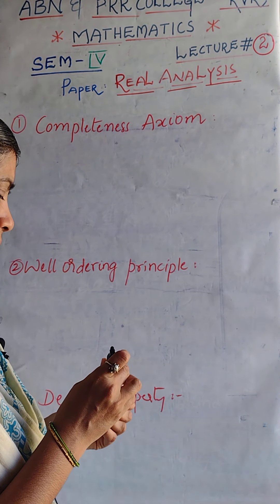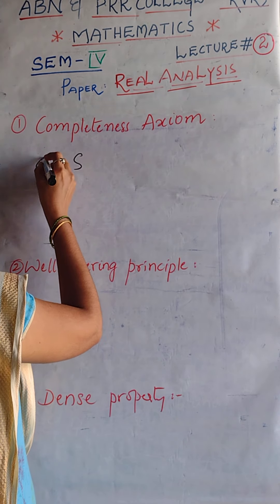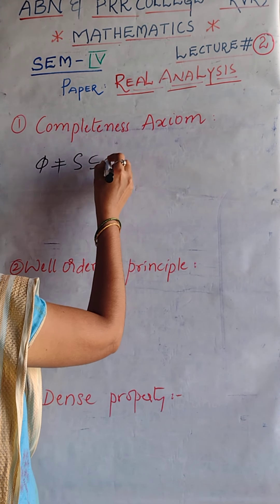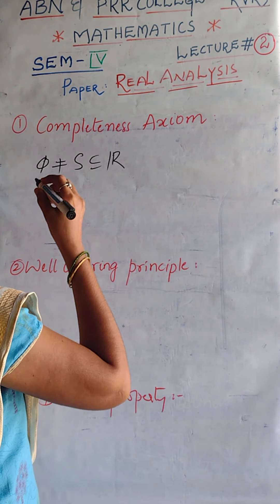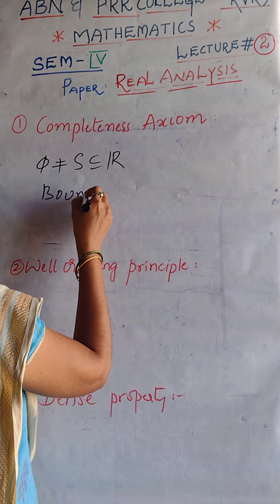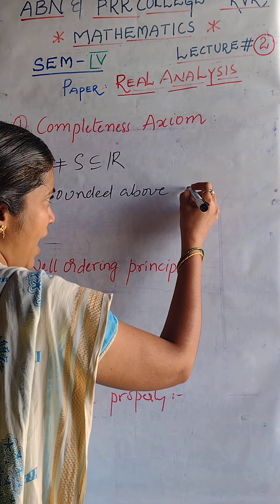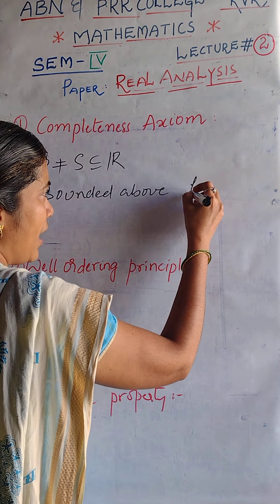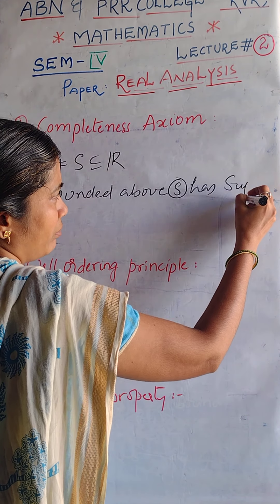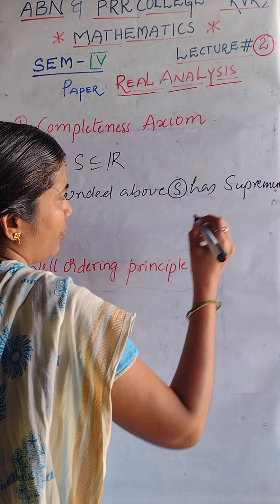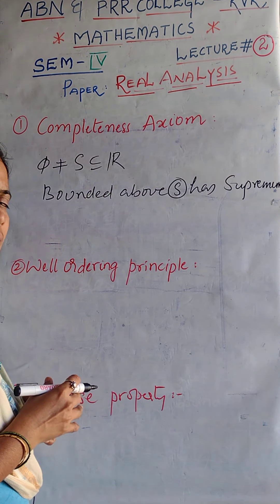Coming to the completeness axiom: what is a completeness axiom? If a set, or an aggregate — any non-empty subset of reals is called an aggregate — which is bounded above, then the completeness axiom states that it has a supremum. A bounded above aggregate must have a supremum.